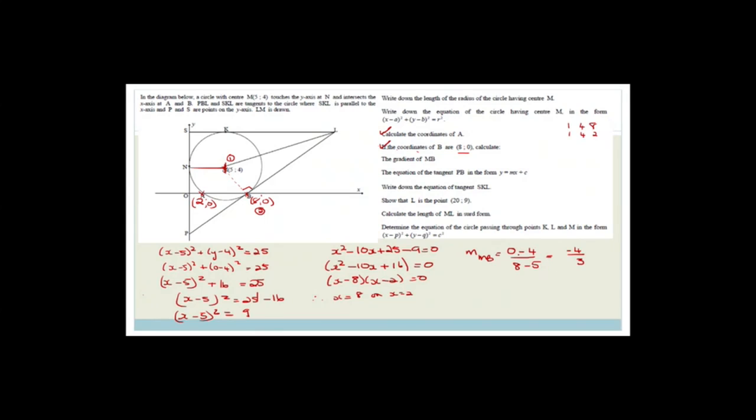Now calculate the gradient of MB. The gradient formula gives us: change in y over change in x with M as point 1 and B as point 2 — that's 0 minus 4 over 8 minus 5, which is minus 4 over 3. And guys, always check that your answer makes sense — you've got a negative answer and this is indeed a negative slope, so that makes sense.